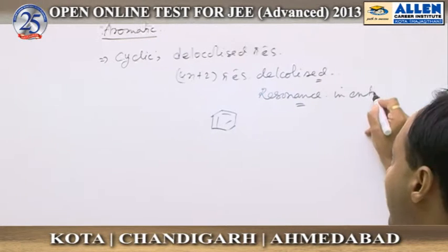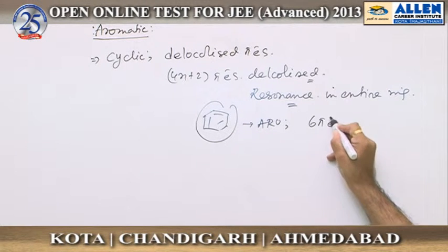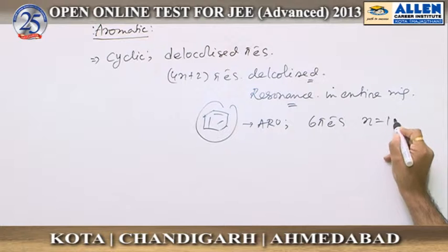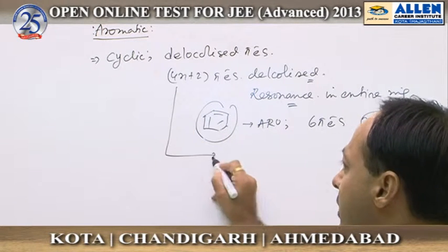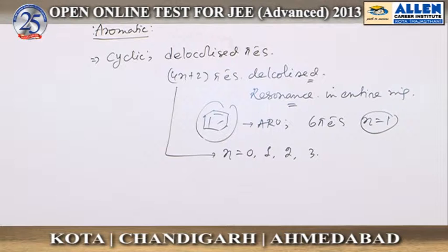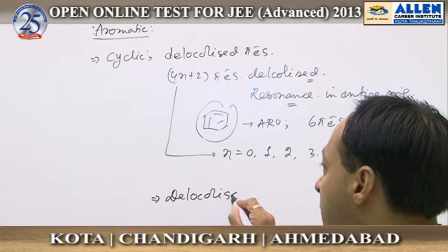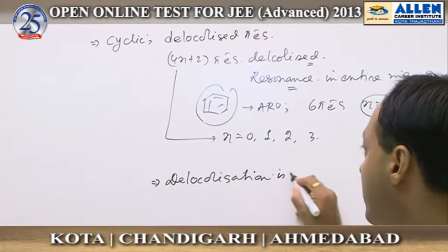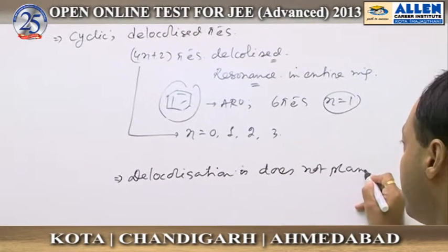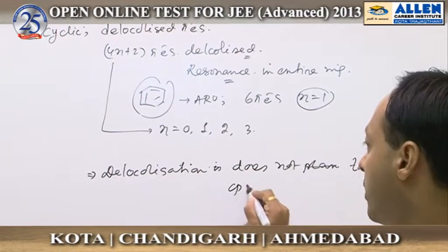For example, benzene is an aromatic compound because it has six pi electrons where n equals one. Here n can be zero, one, two, three, etc. When a compound is not aromatic, it is because delocalization does not take place — if due to some reason delocalization does not occur, then the compound is non-aromatic.